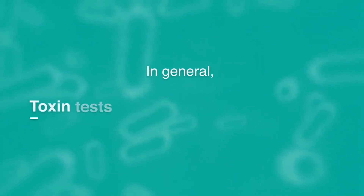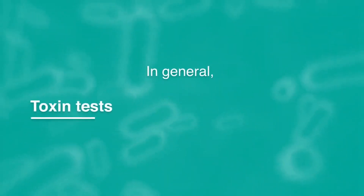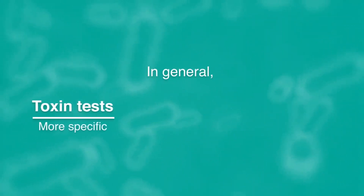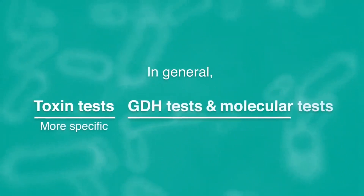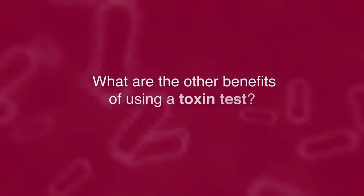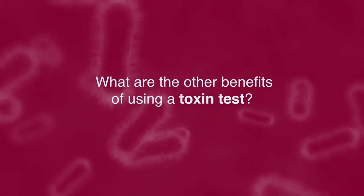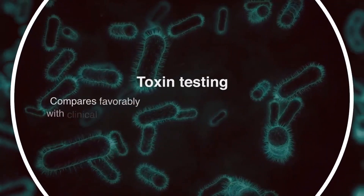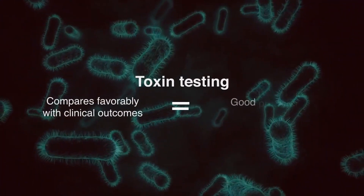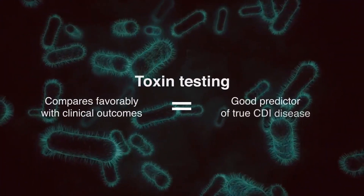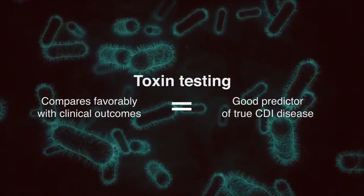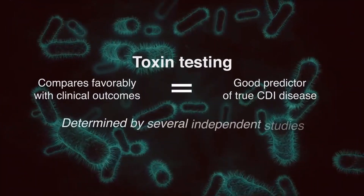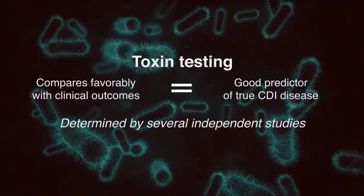In general, in summary, toxin tests are actually more specific, while GDH and the molecular tests are more sensitive. Toxin testing, which compares more favorably with clinical outcomes, is a good predictor of true CDI disease. That's been determined by several different studies independently of each other.